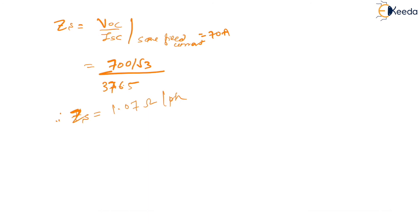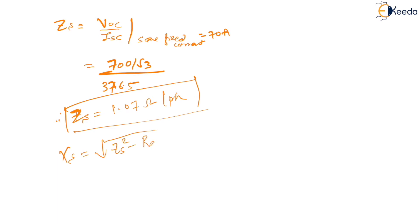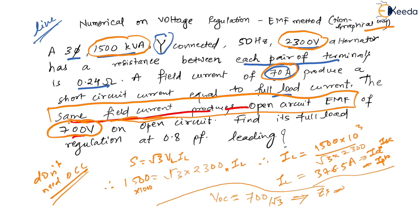So ZS = (700 / √3) / 376.5, which gives approximately 1.07 ohms per phase. Now to find XS, we use XS = √(ZS² − RA²). For RA, the problem states resistance between each pair of terminals is 0.24 ohms.